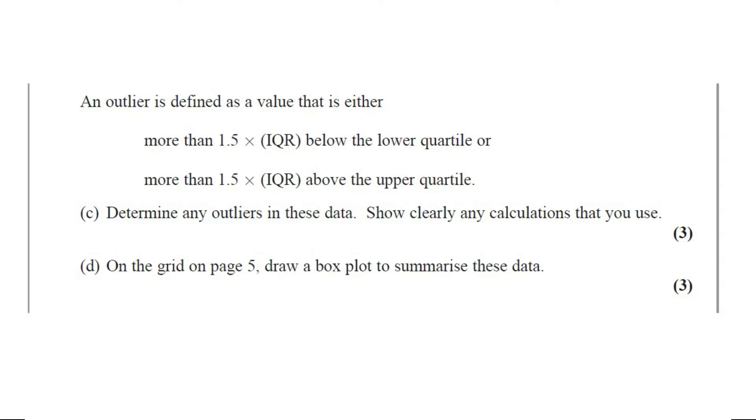An outlier is defined as a value that is either more than 1.5 times IQR below the lower quartile, or more than 1.5 times IQR above the upper quartile. Part C: Determine any outliers in this data. Show clearly any calculations that you use. This question carries three marks.